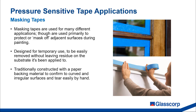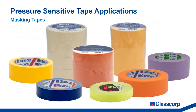Masking tapes have traditionally been constructed with a paper backing material, which allows the tape to conform to curved and irregular surfaces as well as be torn easily by hand for tool-free application. PVC and other plastic film masking tapes are also available and offer additional strength. We supply a large range of masking tapes — generally speaking, our range falls into two categories: paper-backed tapes and PVC-backed tapes.